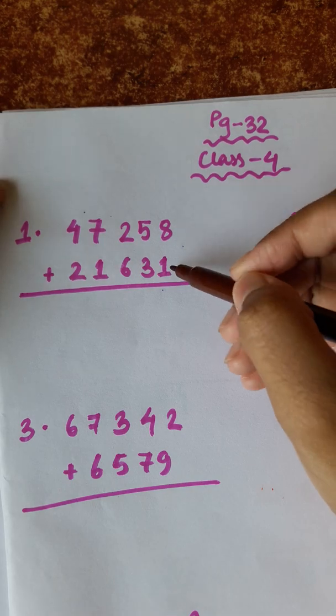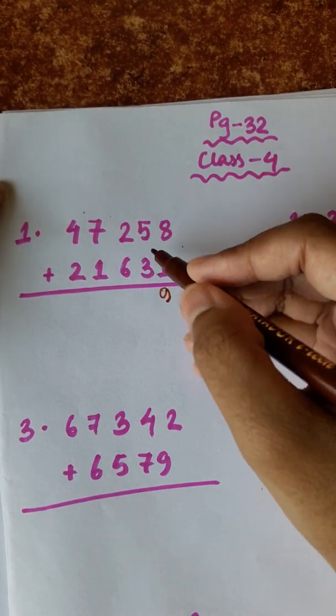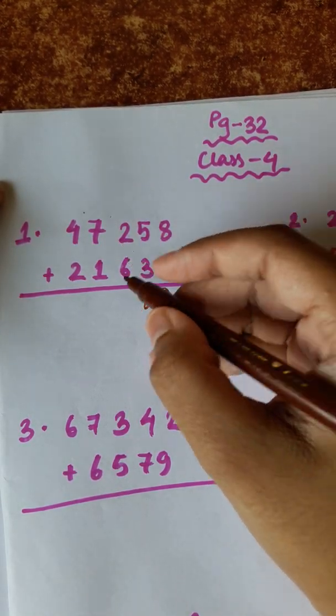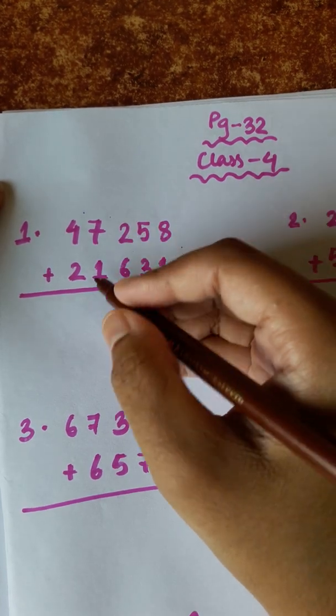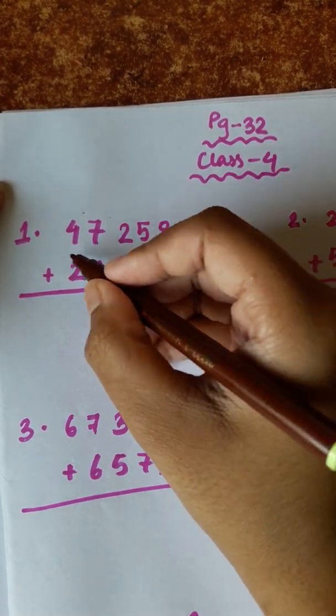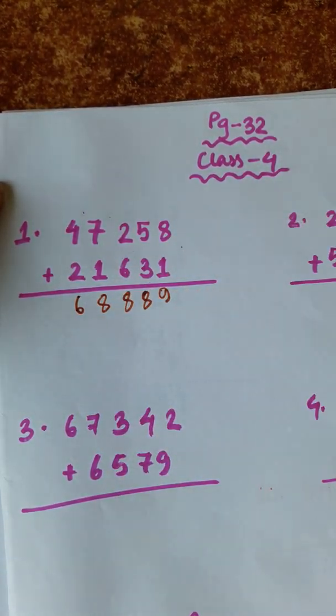8 plus 1 is 9. 5 plus 3 is 8. 6 plus 2 is 8. 7 plus 1 is 8. 4 plus 2 is 6.